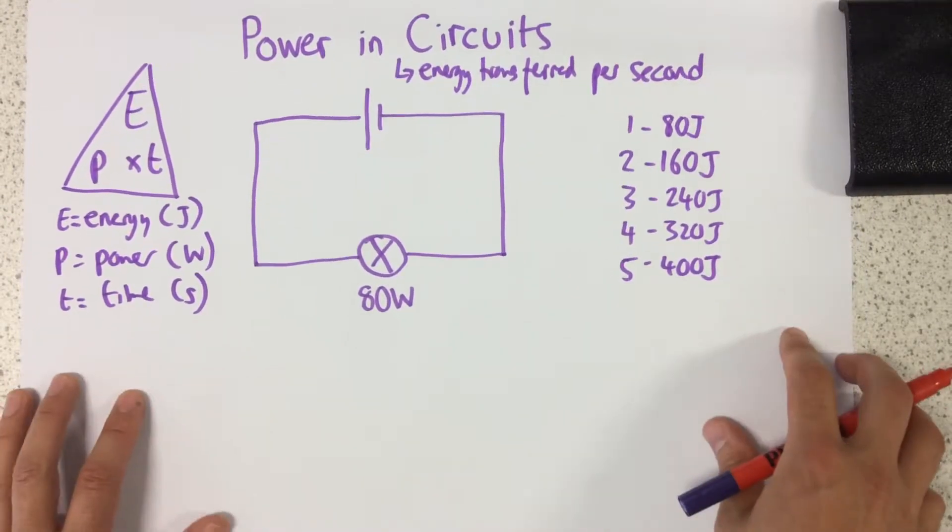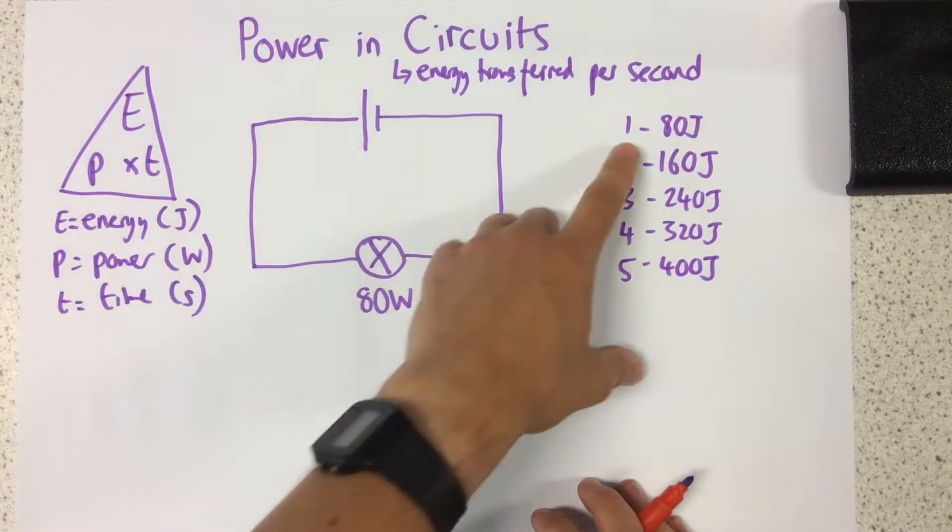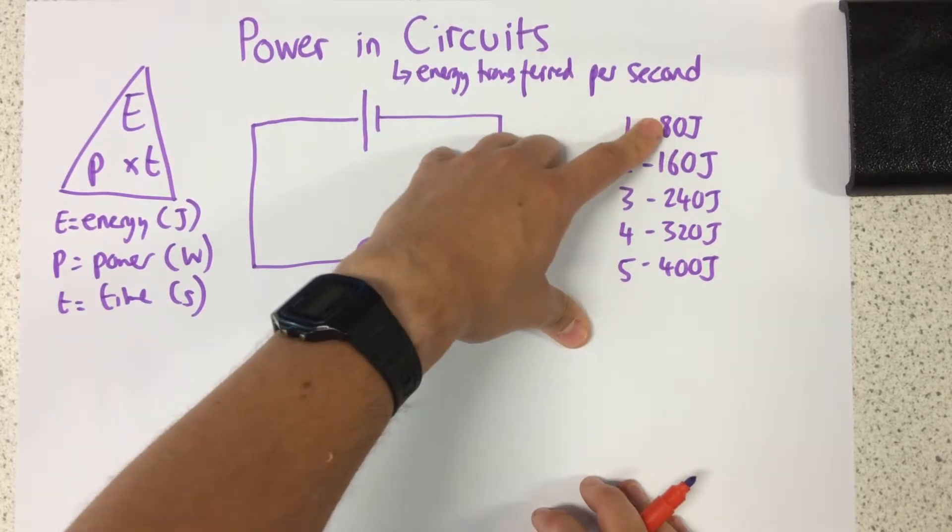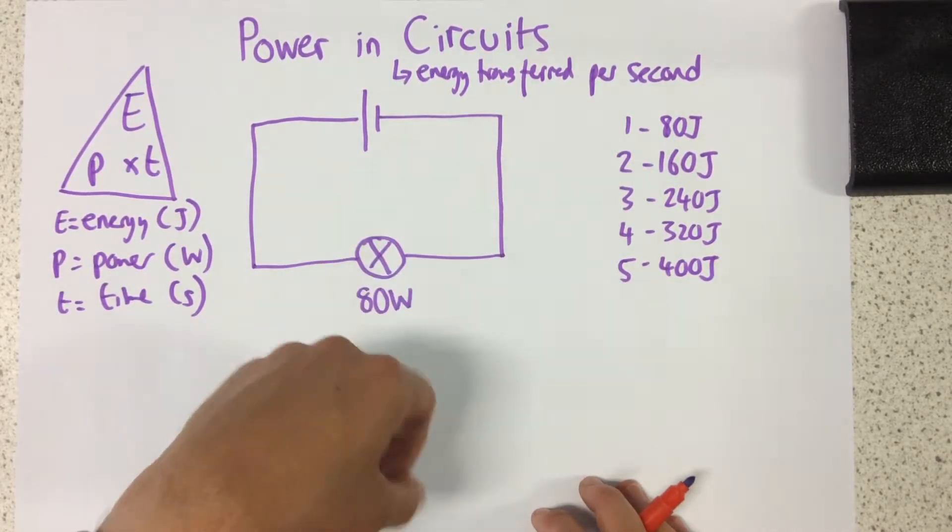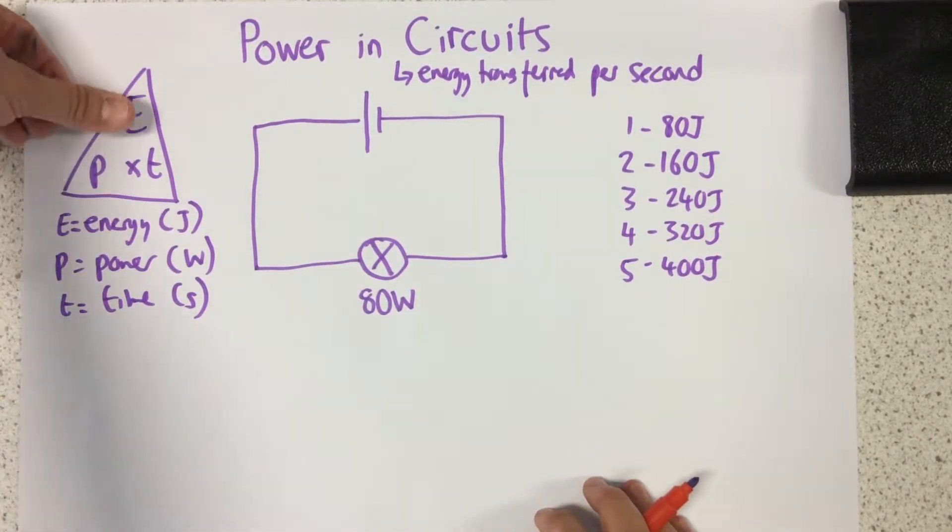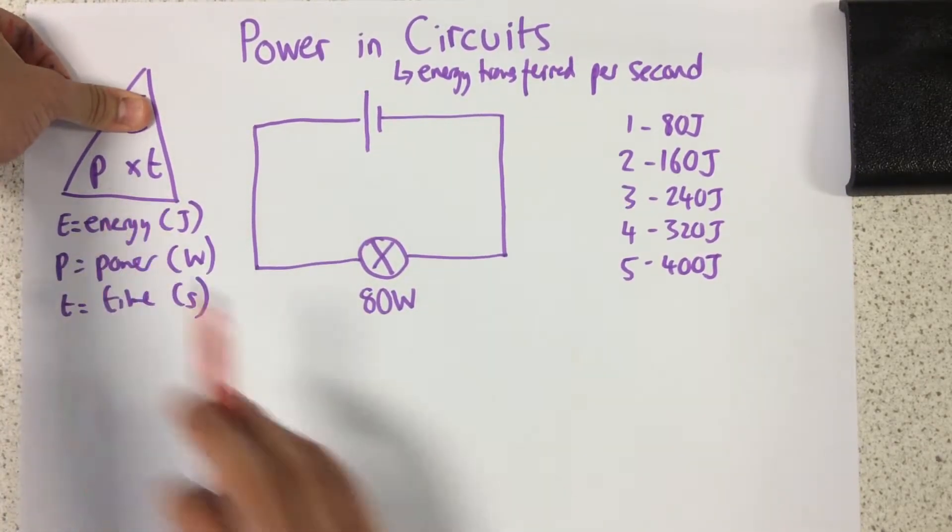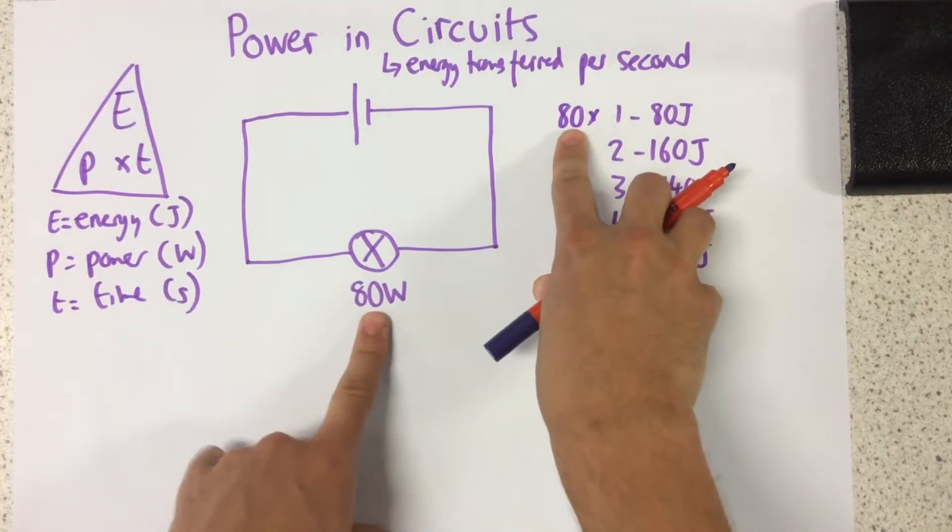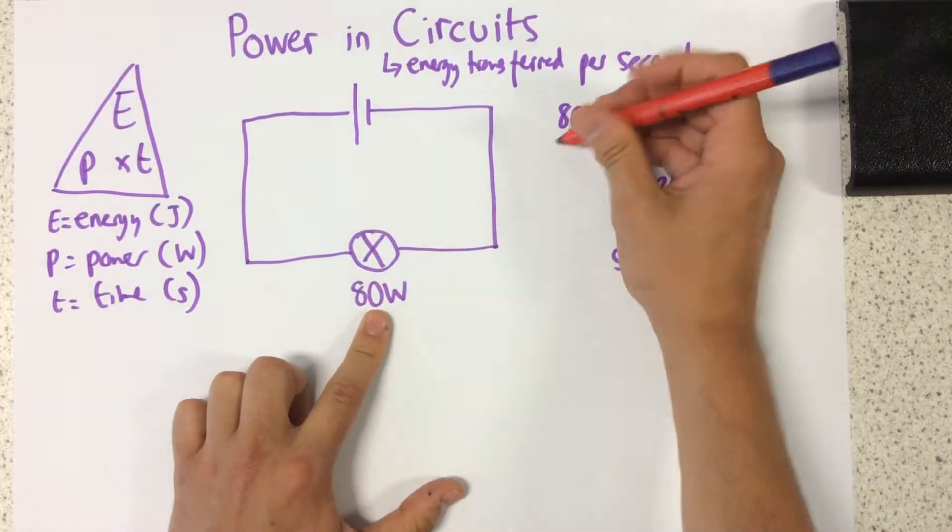So what we can see is we can actually double check this kind of common sense idea here using our equation triangle. So I've said if every second it's transferring 80 joules of energy, then let's use this right here. Energy is power times time. So after one second, our power of this is 80 times one. We would have transferred 80 joules.